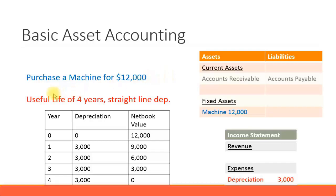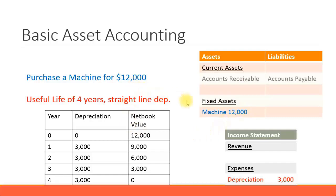Let's look at a basic asset accounting principle with one example. So if you purchase a machine for $12,000 and that machine has a useful life of four years with straight-line depreciation, let's see how the financial entries take place in the system. So initially if you acquire a machine, it will become a fixed asset and you put the value here in the fixed assets — machine $12,000. You can also add other machines; for example, buying another machine for $4,000 would bring the total to $16,000, but in this example we just look at one machine — machine $12,000.